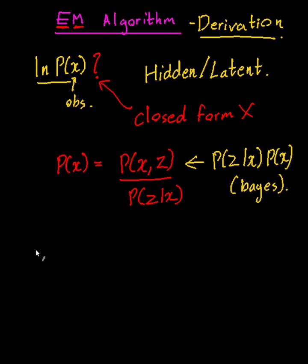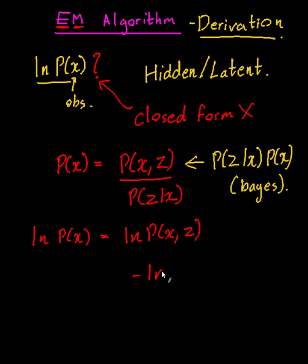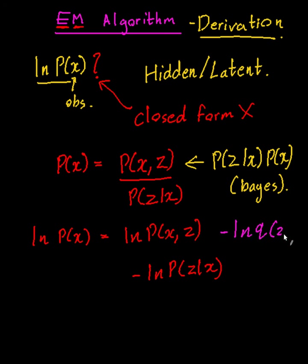Now what we do is take the log of p(x), which equals the log of the joint probability with the hidden variable minus the log probability of z given x. Now this is the tricky part of the EM algorithm. What I'm going to do is subtract log q(z) here and add it over there — so effectively I'm adding zero, there's no net change. But it's important that we do this step.